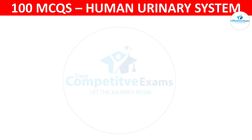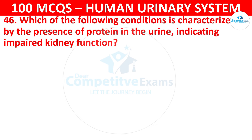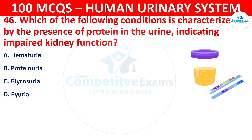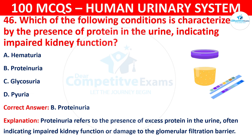Question 46: Which of the following conditions is characterized by the presence of protein in the urine, indicating impaired kidney function? The options are: hematuria, proteinuria, glycosuria, or urea. The correct answer is B, that is proteinuria. Proteinuria refers to the presence of excess protein in the urine, often indicating impaired kidney function or damage to the glomerular filtration barrier.